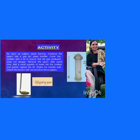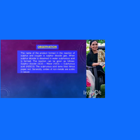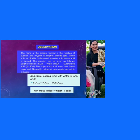Lower the deflagrating spoon into the gas jar, which will fill up with sulfur dioxide gas. Then remove the spoon, add a small quantity of water into the gas jar, and quickly replace the lid. Shake the gas jar well. The product formed by the reaction of sulfur dioxide gas and water is sulfurous acid — H₂SO₃. When this sulfurous acid is tested with litmus paper, it turns blue litmus paper red, showing that it is an acidic oxide.